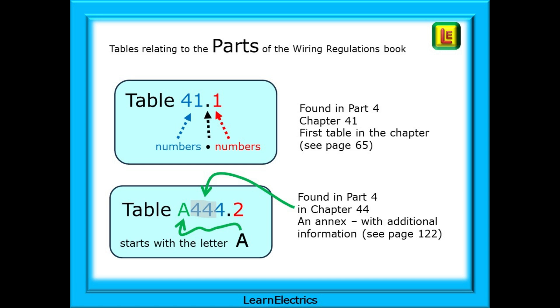Looking at the tables relating to the parts section of the wiring regulations book, we can use table 41.1 as an example. This is listed at the top of page 573 and directs us to page 65. Looking at the numbers, we can see that this will be part 4, chapter 41, and the first table that is in that chapter. There are also annexes to some of the chapters - a few pages with additional information to support that particular chapter. Because the table is in the annex, the table begins with the letter A for annex. It is an annex to chapter 44, and this is the second table in that annex.